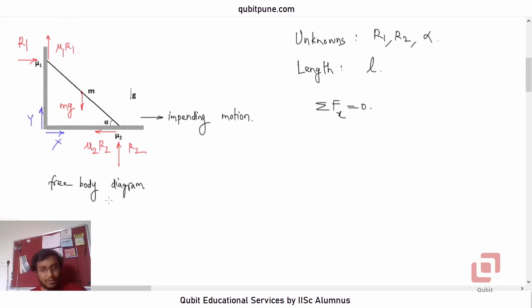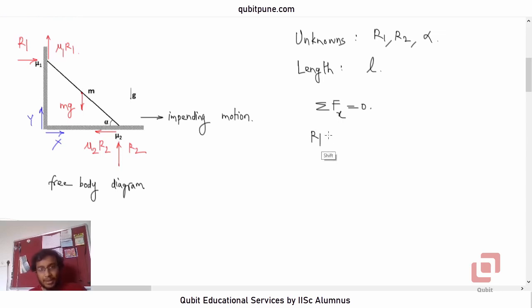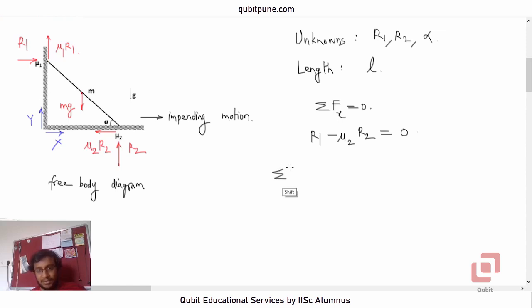The first equilibrium equation is ΣFx = 0. The forces acting horizontally are: R1 acting to the right and μ2·R2 acting to the left. Therefore: R1 − μ2·R2 = 0. That is our first equation of equilibrium.